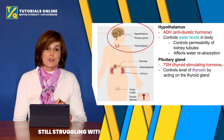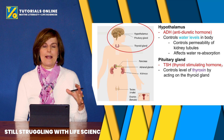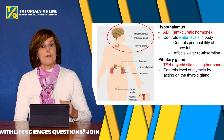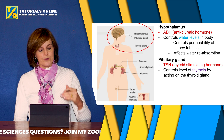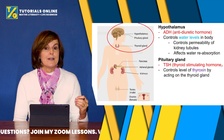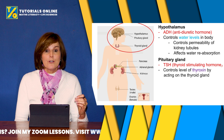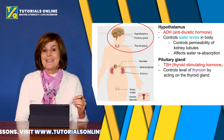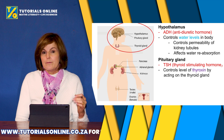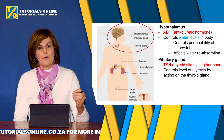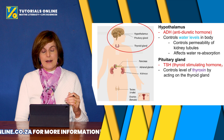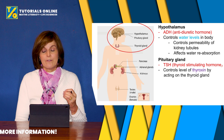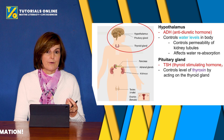Then you get the pituitary gland. The pituitary gland is like the boss gland of the body — it secretes lots of hormones. The first one I want to mention is thyroid stimulating hormone, or TSH. TSH stimulates the thyroid gland and controls the level of thyroxin that the thyroid gland produces.